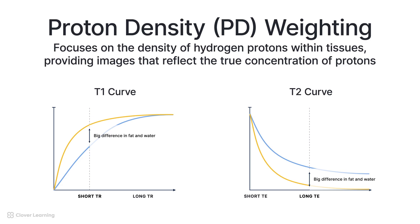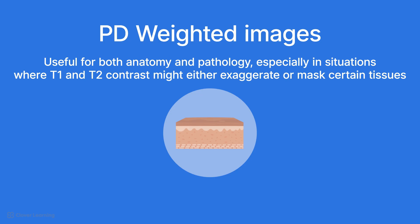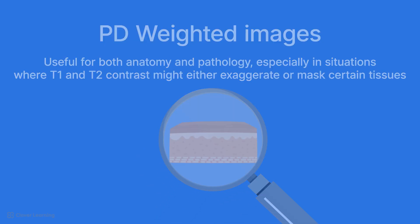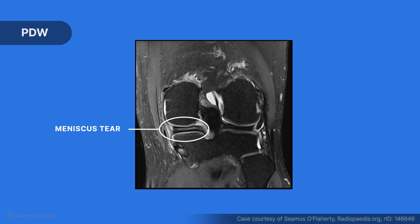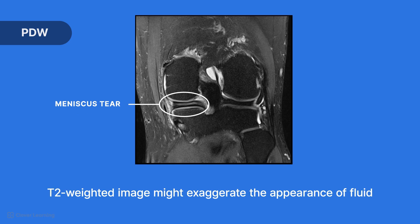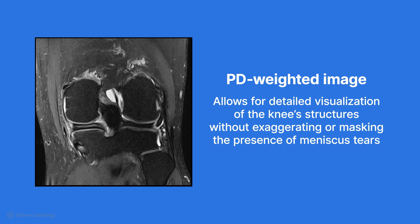Proton density, PD-weighting, focuses on the density of hydrogen protons within tissues, providing images that reflect the true concentration of protons. PD contrast is present in all images to some extent, but PD-weighting emphasizes PD contrast. PD-weighted images are useful for both anatomy and pathology, especially in situations where T1 and T2 contrast might either exaggerate or mask certain tissues. For example, in musculoskeletal imaging, PD-weighted images with fat saturation are particularly useful when diagnosing meniscal tears. The meniscus tear may not change the T1 characteristics of the tissue, and a T2-weighted image might exaggerate the appearance of fluid. A PD-weighted image allows for detailed visualization of the knee's structures without exaggerating or masking the presence of meniscus tears.